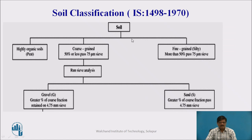Now let us move to the IS soil classification system as per IS 1498-1970. As per this code, the soil is classified into two main categories: coarse-grained and fine-grained. However, if there is high organic content, it can be separately classified as highly organic soil. Coarse-grained soils are those where 50% or less of the material passes the 75-micron sieve, and fine-grained soil is where more than 50% passes the 75-micron sieve. Within coarse-grained soil, we have two types: gravel and sand.